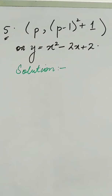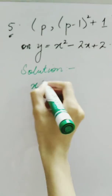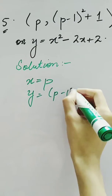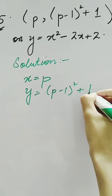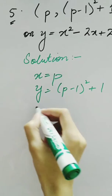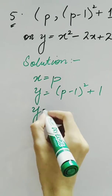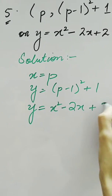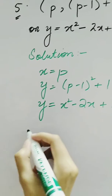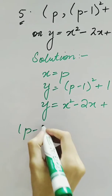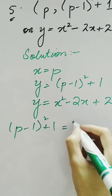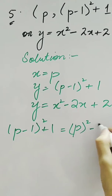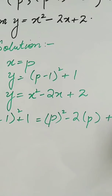Look at another question in which the x coordinate is given as p and the y coordinate is given as (p - 1)² + 1. We have to put these values in the given equation which is y = x² - 2x + 2. We know y = (p - 1)² + 1 and x = p, so it becomes p² - 2p + 2.